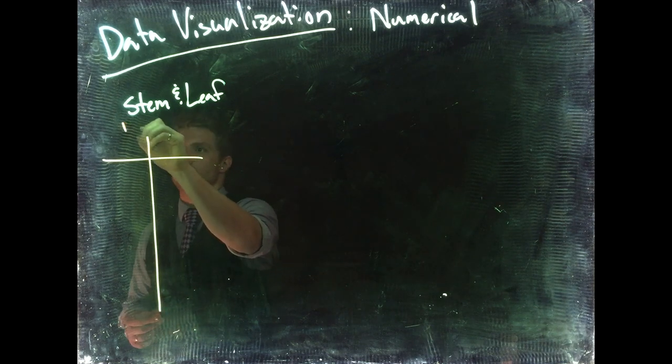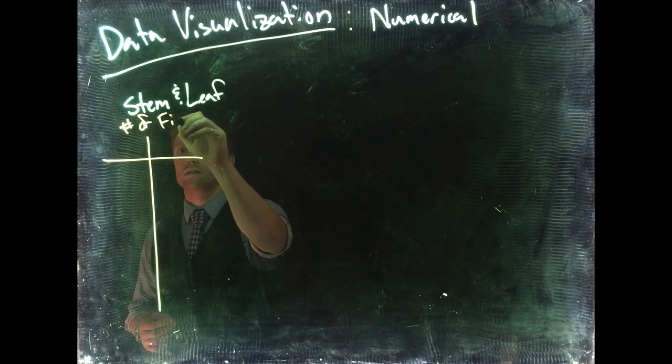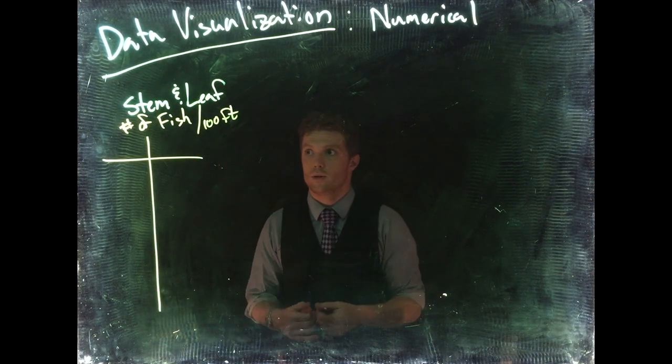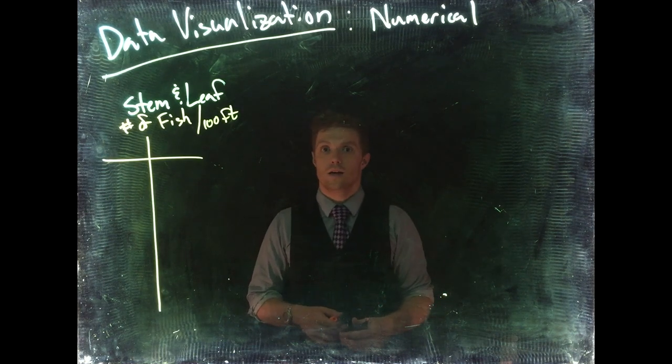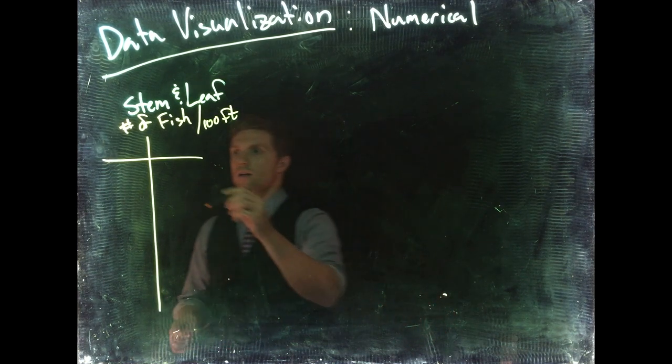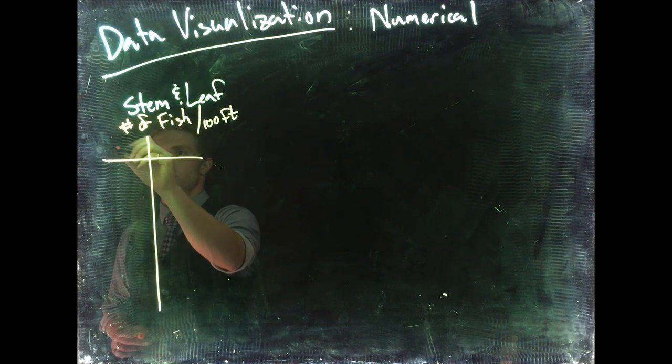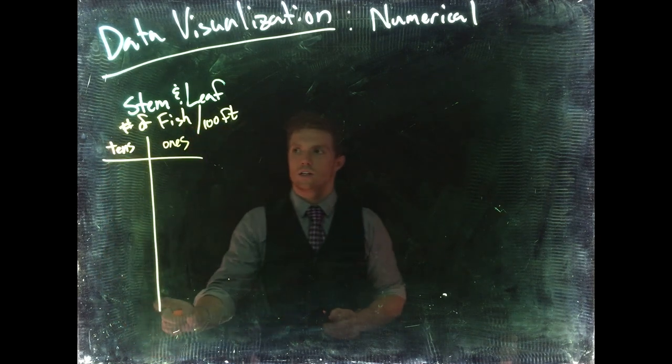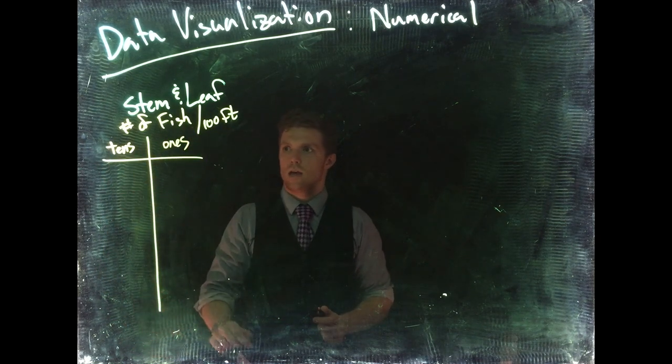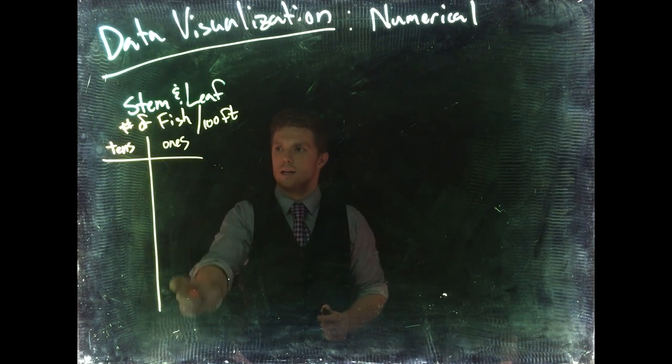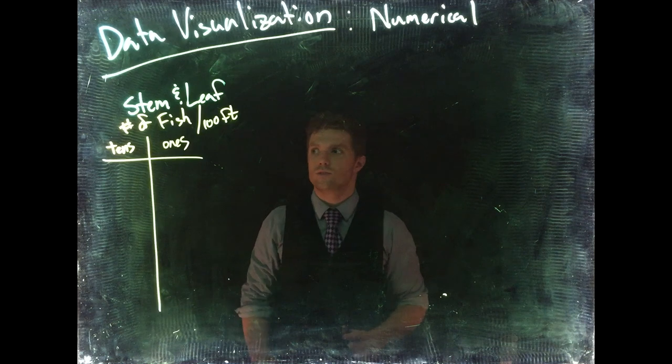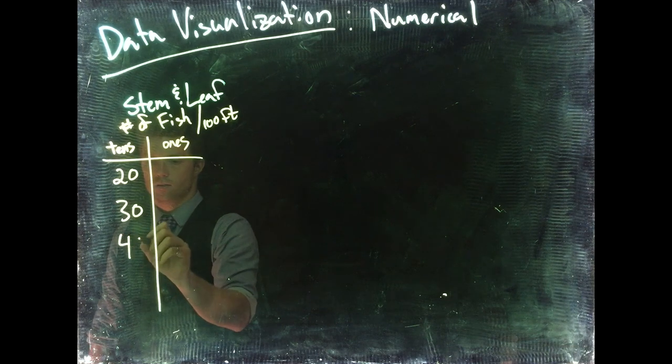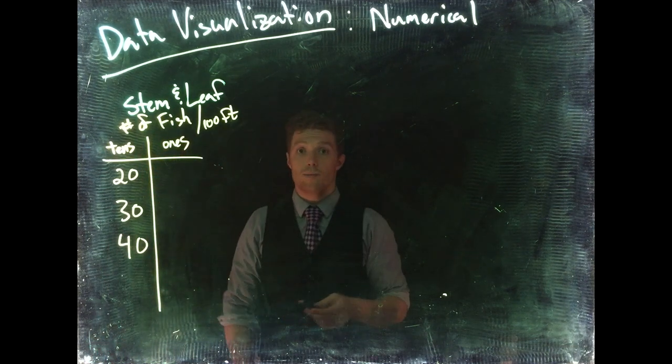Let's say we were measuring the number of fish per 100 feet. We go on a stream, measure lots of different sections of 100 feet, and count how many fish there are. This would be our stem—the tens column—and this is our ones column on the right. The tens is our stem, these are our leaves. The tens could be 20, 30, 40.